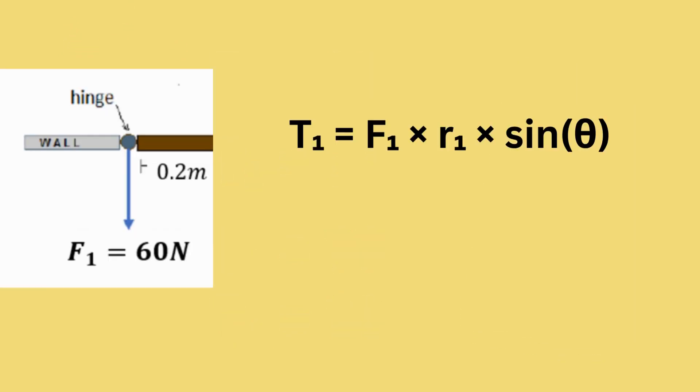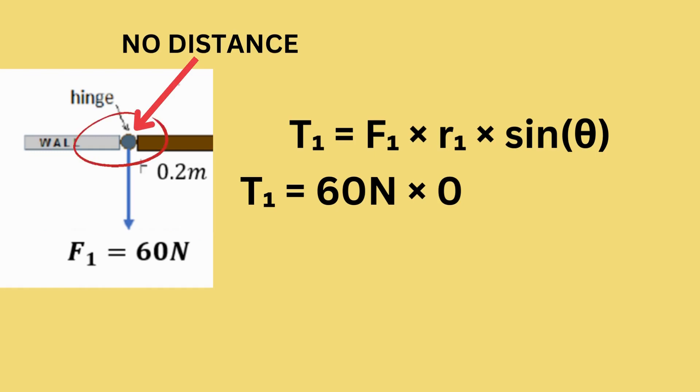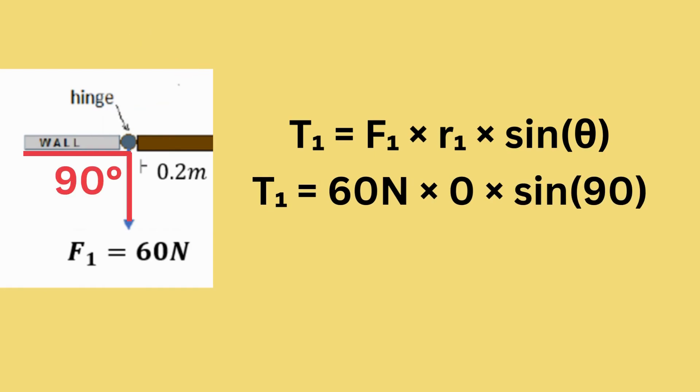For torque 1, our equation will be T1 equals F1 times R1 times sine theta. Then we can write T1 equals the force which is 60 newtons times 0, because there is no distance between the hinge and the force since the force is applied exactly on the hinge, times sine 90 because the force is applied perpendicular to the hinge. Solving this, we get torque 1 equals 0 newton meters.